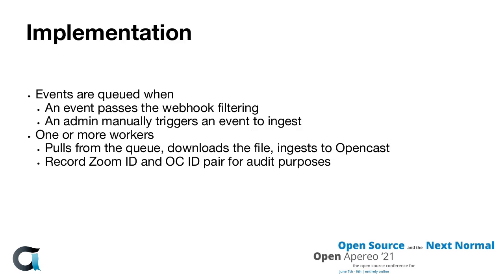Overall the implementation wasn't that bad. There's a lot of logic, but the overall structure is pretty simple: events come in; if they pass the filter or are manually triggered, they get put into a queue; one or more workers — ETH is running with one and it's perfectly fine — pull from the queue, download the file from Zoom, and ingest it to Opencast. It also records the Zoom ID and Opencast ID so they can figure out where a video ended up if something goes wrong. This is all implemented in Python and it's not public yet, but it will be soon.